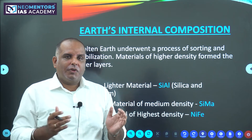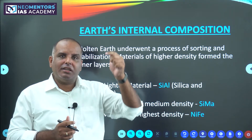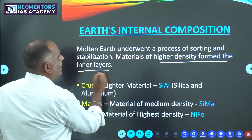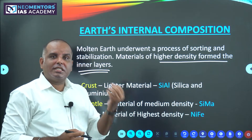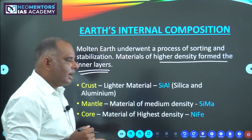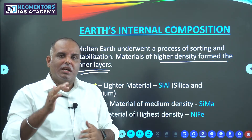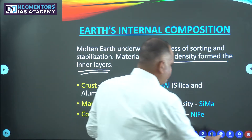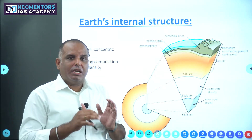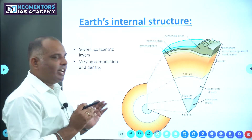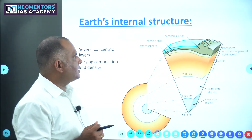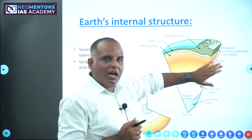In the earth, we would find stratification with varying density. Higher density formed the inner layers; lighter density material formed the outer layers. So broadly, we say earth is made up of three different layers: crust, mantle, and core. Earth is made up of concentric layers of materials. On a broad scale, it is made up of three layers — crust, mantle, and core. The core is further divided into two more layers: inner core and outer core.